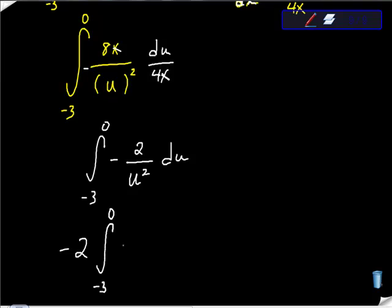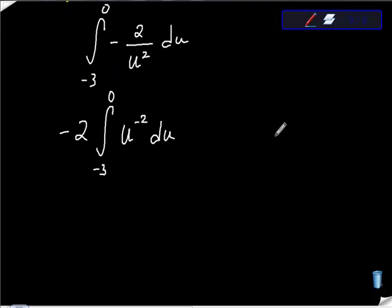I'm going to leave this like this, and this u² at the bottom is u^(-2), isn't it? Now I'm going to go ahead and start to integrate. I'm integrating in terms of u.